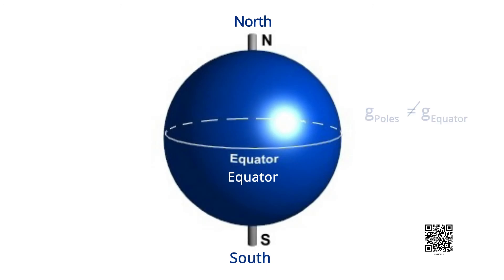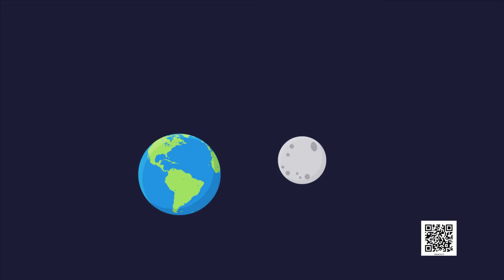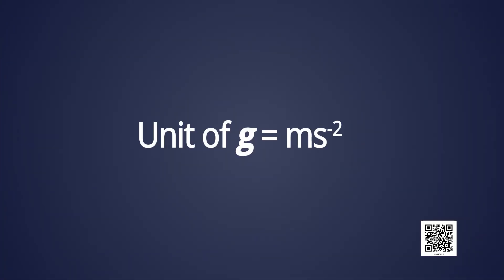It is denoted by small g. The value of small g is different at poles and at the equator. The value of acceleration due to gravity, small g, depends on the shape of the earth, height above the surface of the earth, and depth inside the surface of the earth. The value of small g is also different on earth and on moon — the acceleration due to gravity on earth is six times more than on the moon. The unit of acceleration due to gravity is meter per second square.